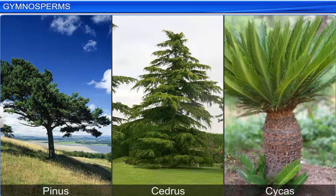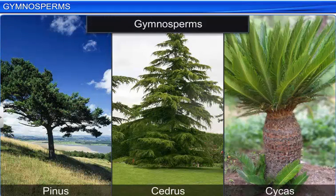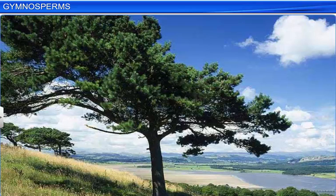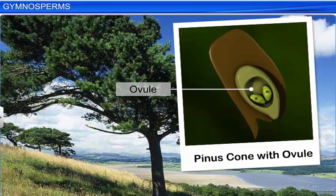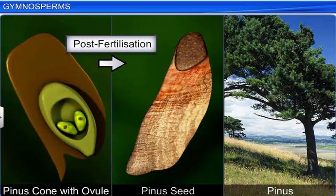It is common to find trees such as Pinus, Cedrus, and Cycas growing in the cooler regions of India. All of them are gymnosperms — a group of plants in which the ovules are not enclosed by an ovary wall and remain exposed or naked before fertilization, as well as post-fertilization when they develop into seeds. These seeds germinate to give rise to new plants.